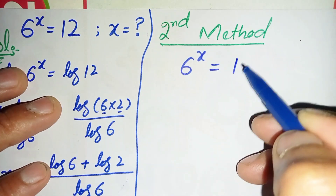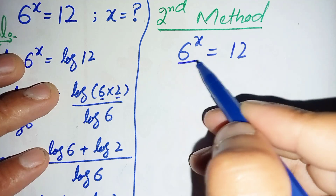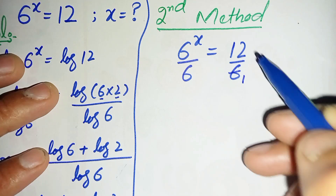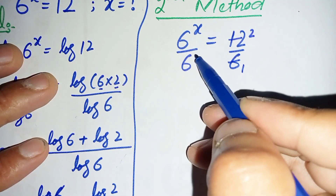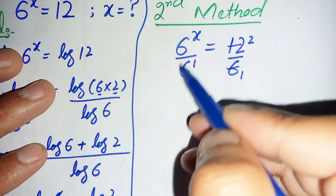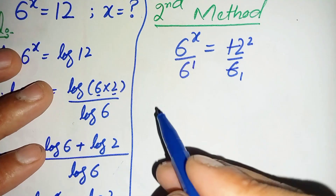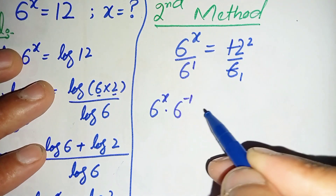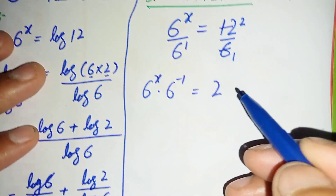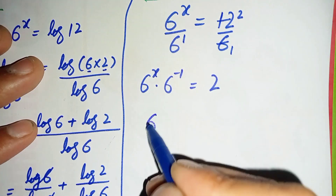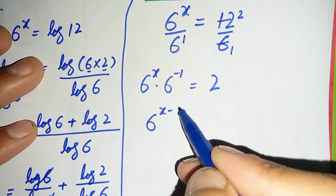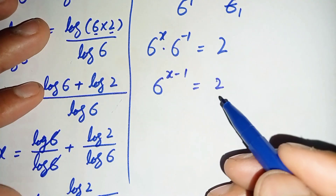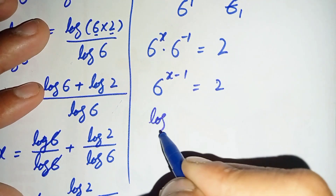In the second method we write the equation 6 raised to power x equals 12 and divide both sides by 6. Since 12 divided by 6 is 2, and moving 6 raised to power 1 gives 6 raised to power x minus 1 on the left, we get 6 raised to power x minus 1 is equal to 2. We then take log on both sides.